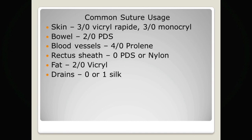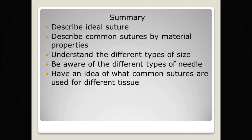We've now come to the end of this podcast. You should now be able to describe the characteristics of an ideal suture, describe the common suture types by their material properties — whether they are monofilament or braided, natural or synthetic, absorbable or non-absorbable — understand the different suture sizes, be aware of the different types of needles, and have an idea of what sutures are commonly used in theatre for different tissue types.